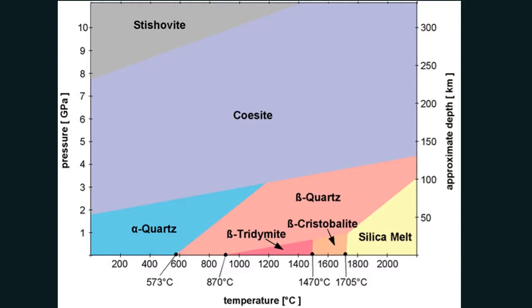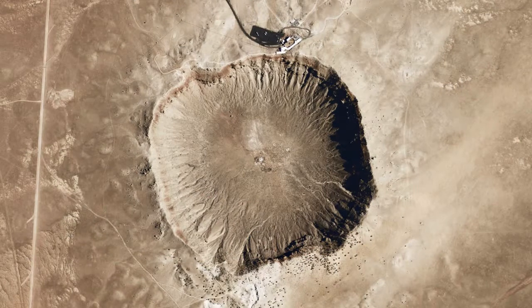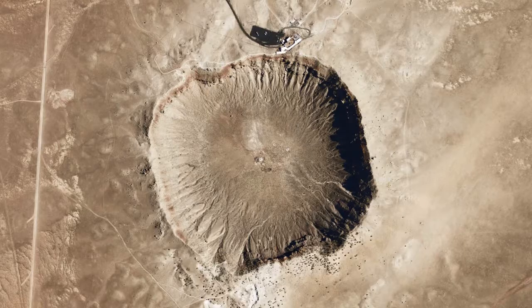Though quartz is chemically simple, its behavior in the PT graph is quite complex. Low quartz is found in all types of rocks, signifying its formation at relatively low temperatures. Coesite is a high-pressure form of silica and is thus found in meteorite impact craters. It may also sometimes occur inside inclusions of diamonds and garnets formed under very high pressure conditions.